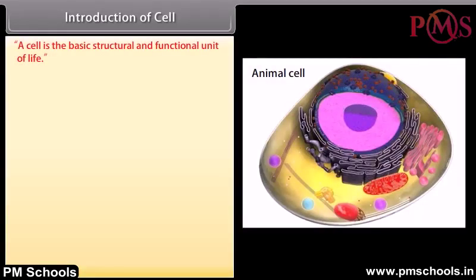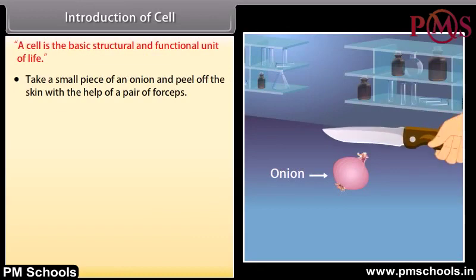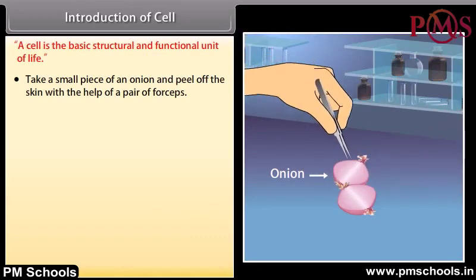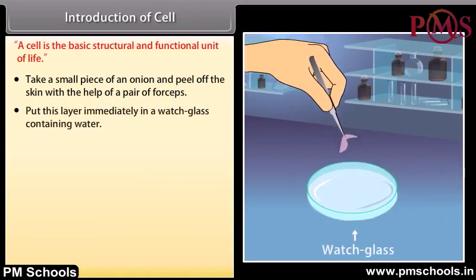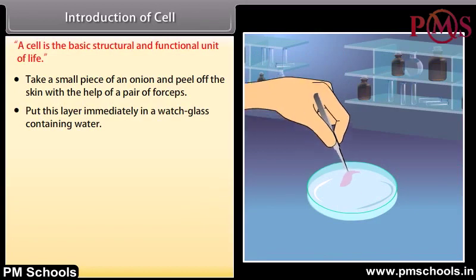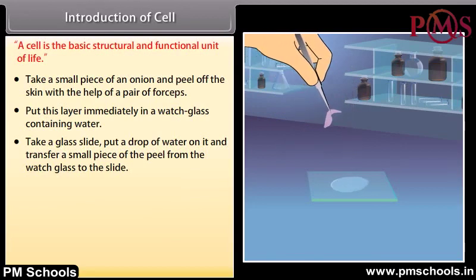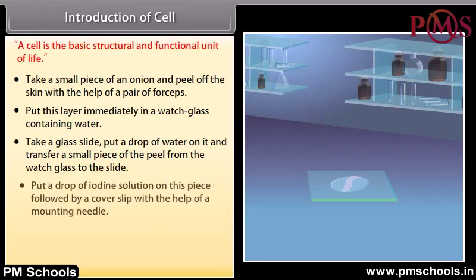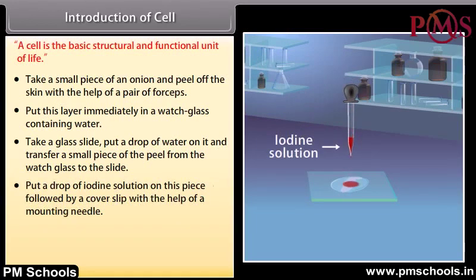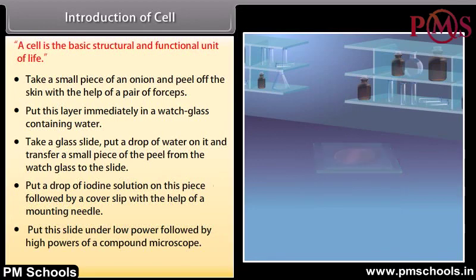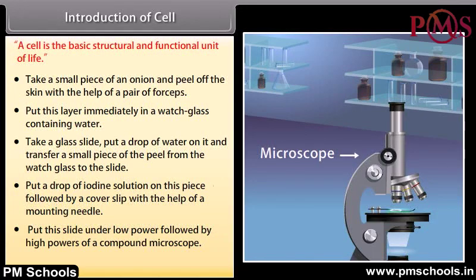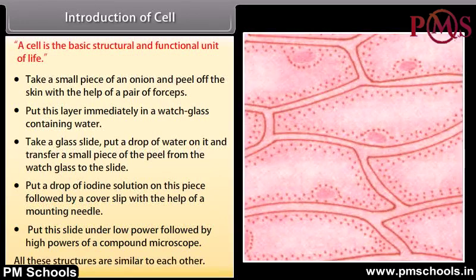A cell is the basic structural and functional unit of life. In an experiment, take a small piece of an onion and peel off the skin with forceps. Put this layer in a watch glass containing water, then transfer a small piece of the peel onto a glass slide with a drop of water. Add a drop of iodine solution and cover with a cover slip. View the slide under low power followed by high powers of a compound microscope — all these structures are similar to each other.